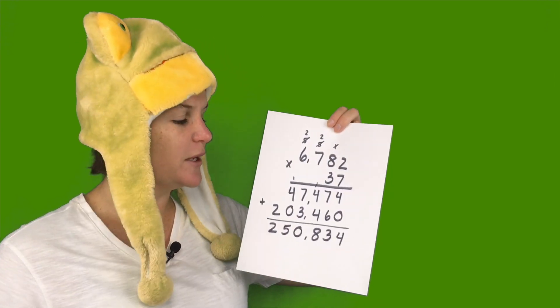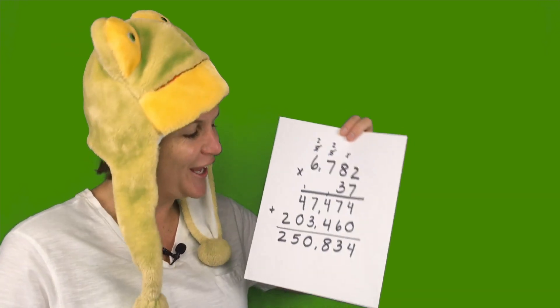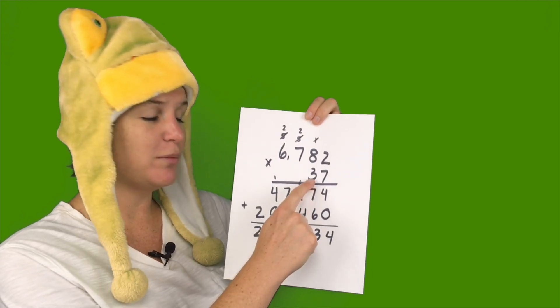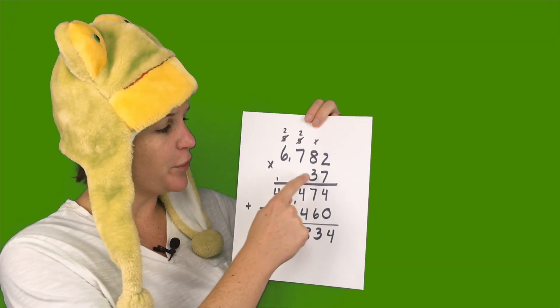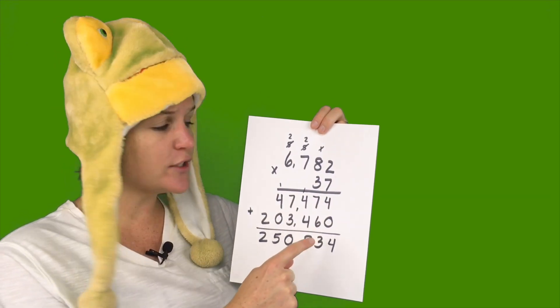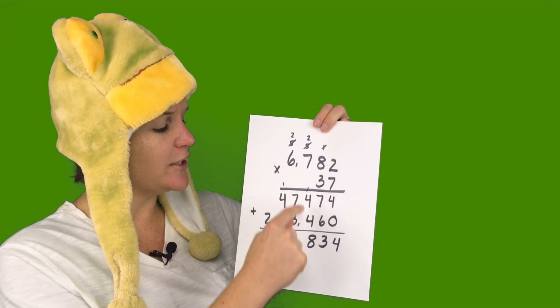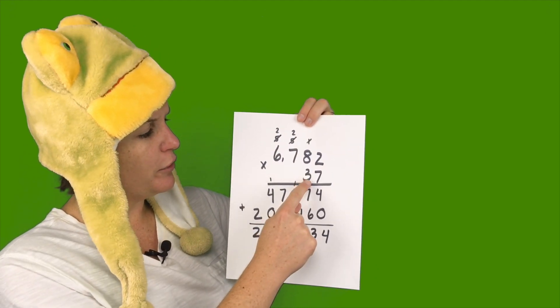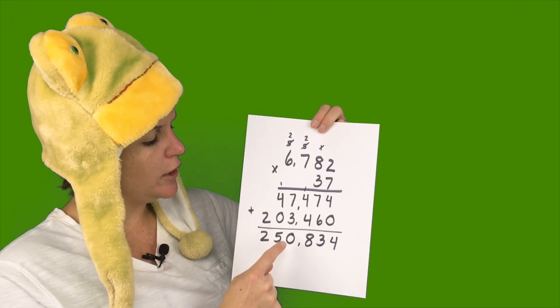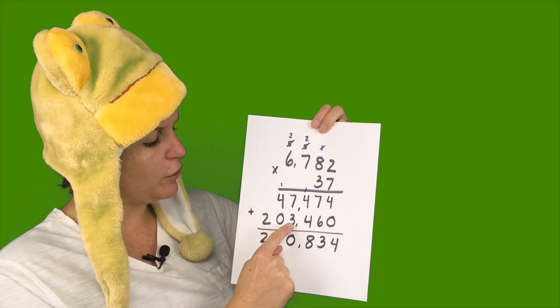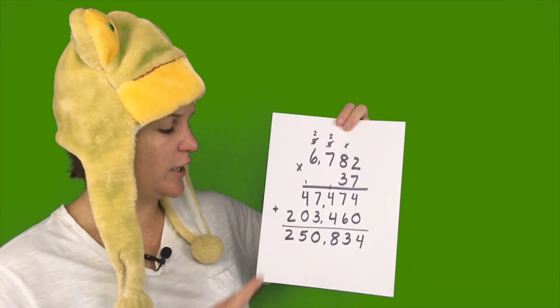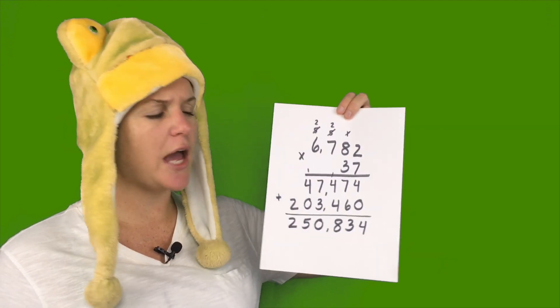And I put a 0 here to hold the place, because now we're multiplying by 30. So 3 times 2 is 6. 3 times 8 is 24. So 4 down here, 2 up here. 3 times 7 plus 2 is 23. So 2 up here, 3 down there. And 3 times 6 plus 2 is 20. So 20. And then here's how I added them up.